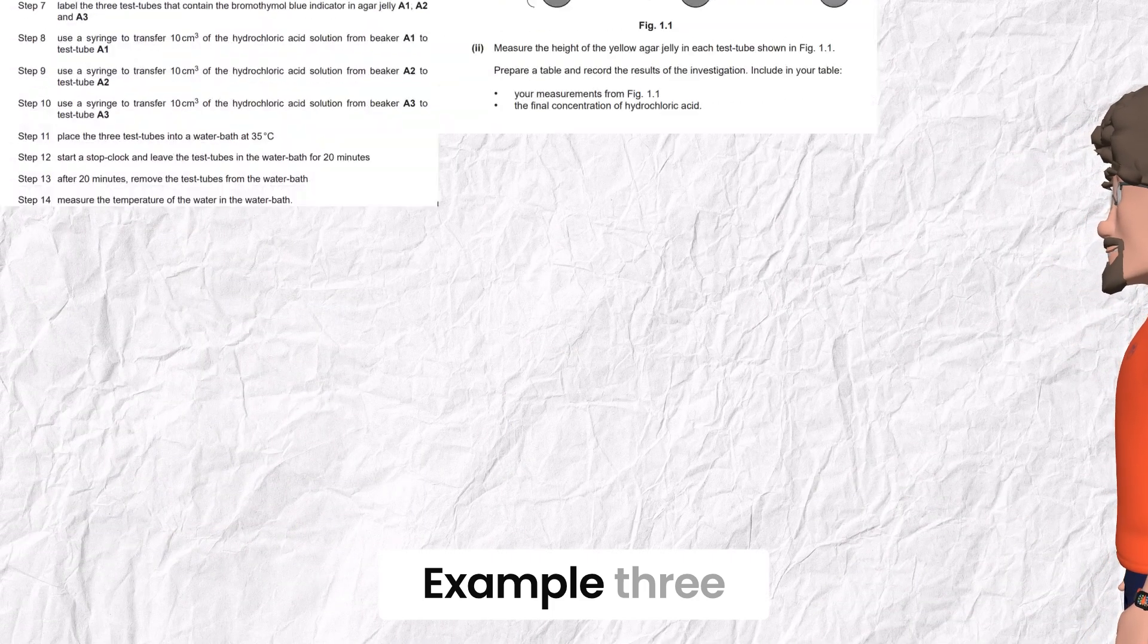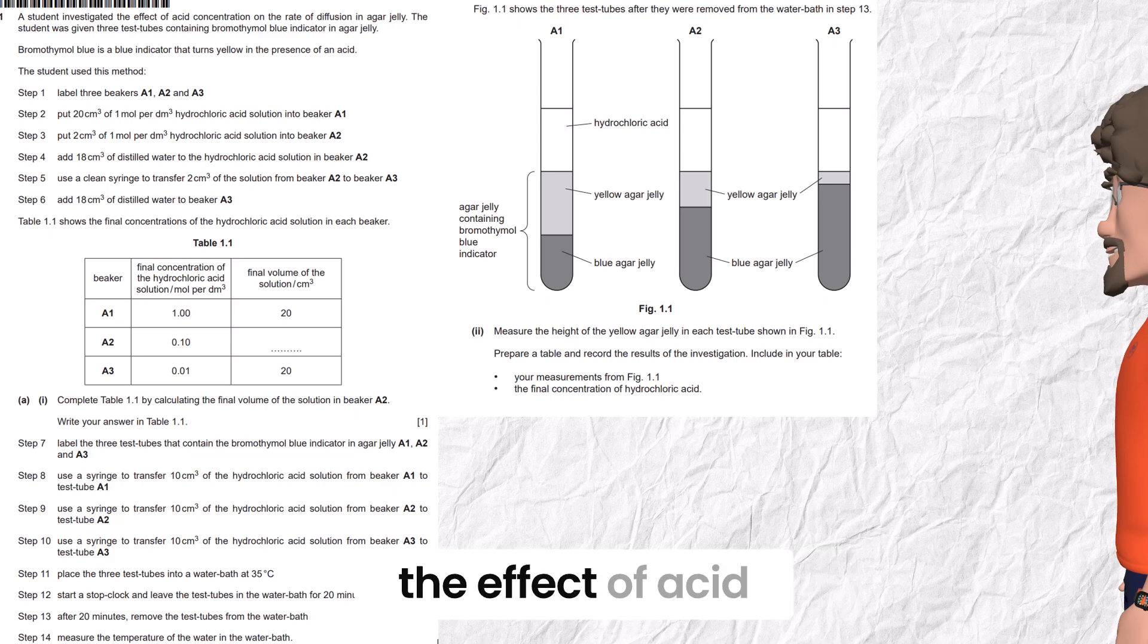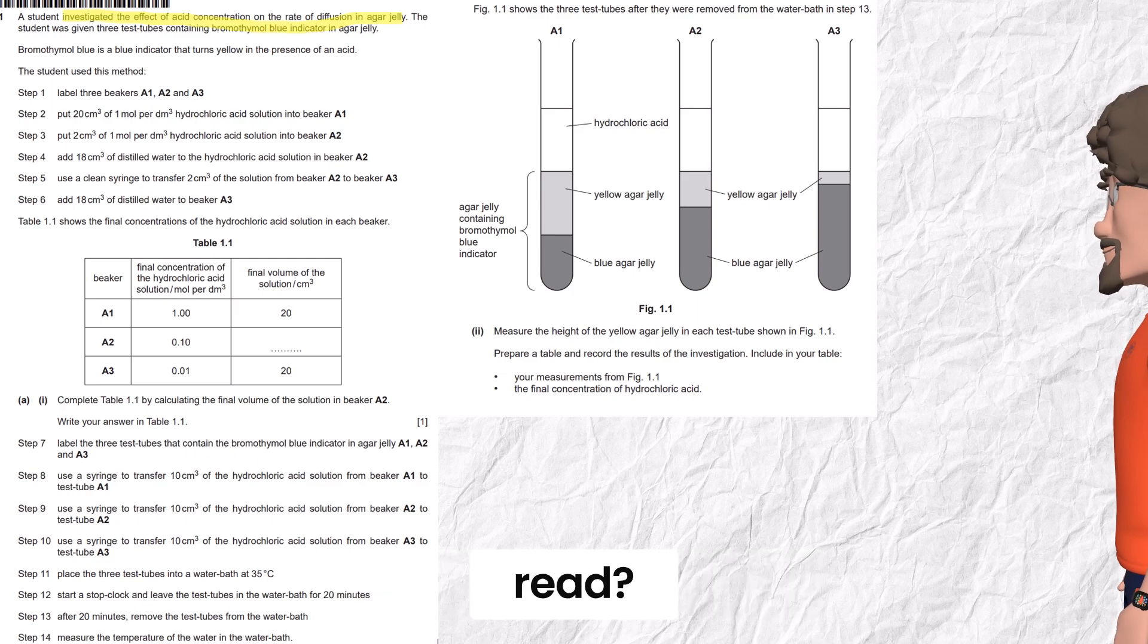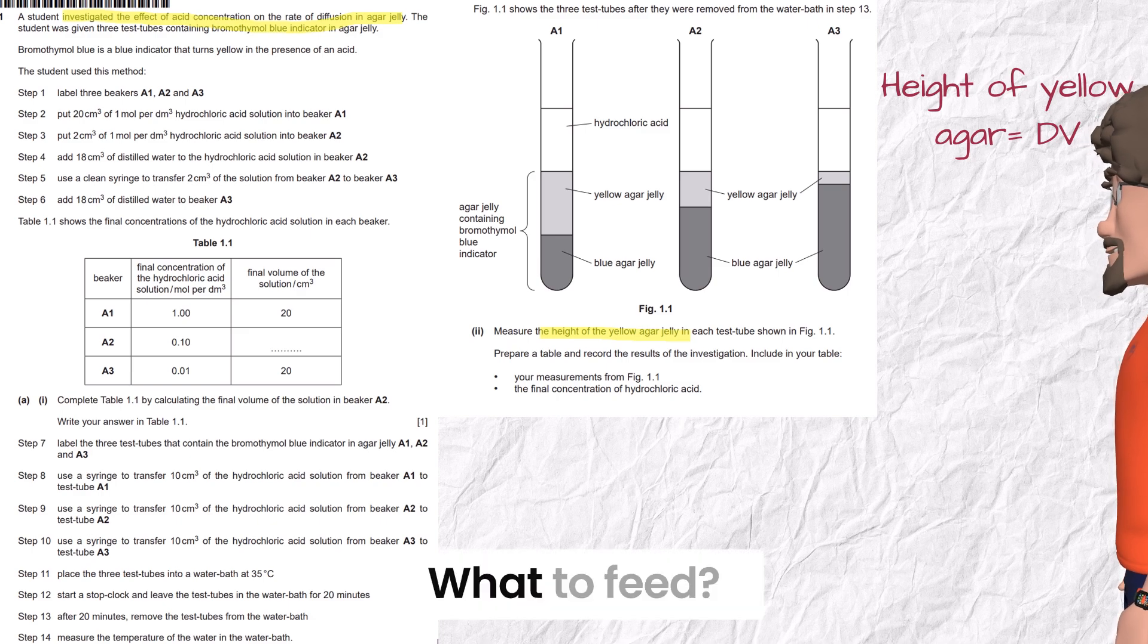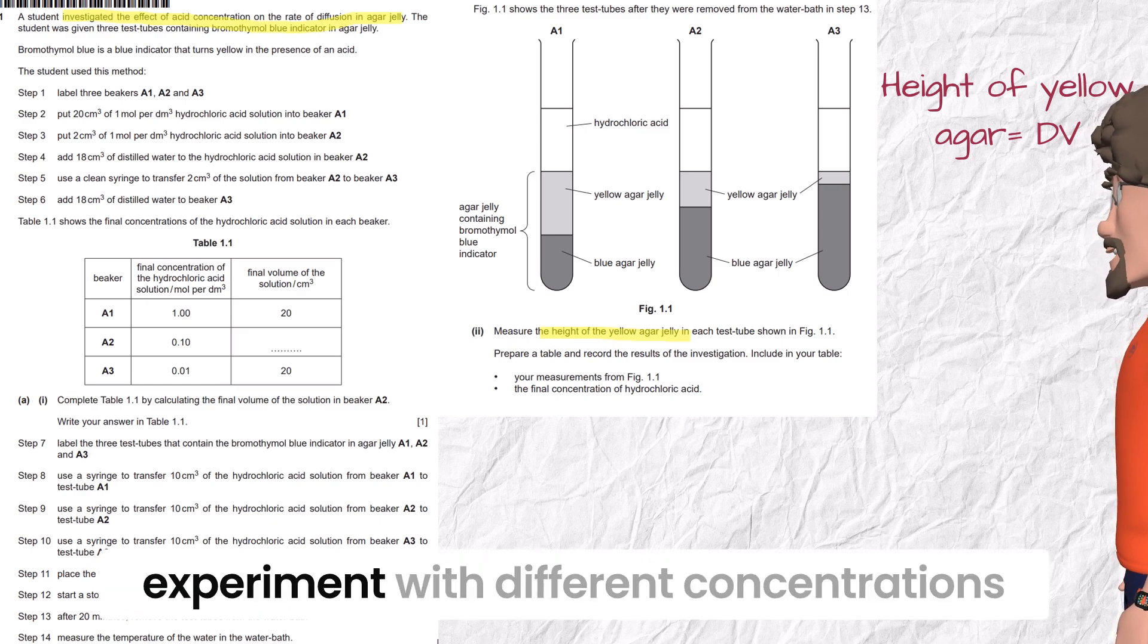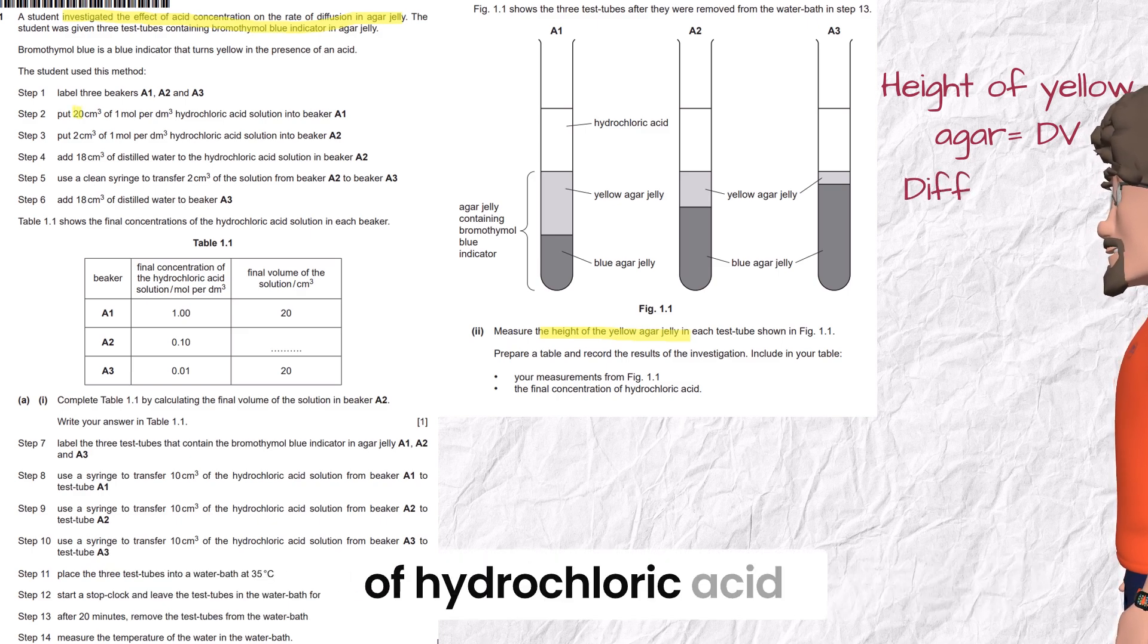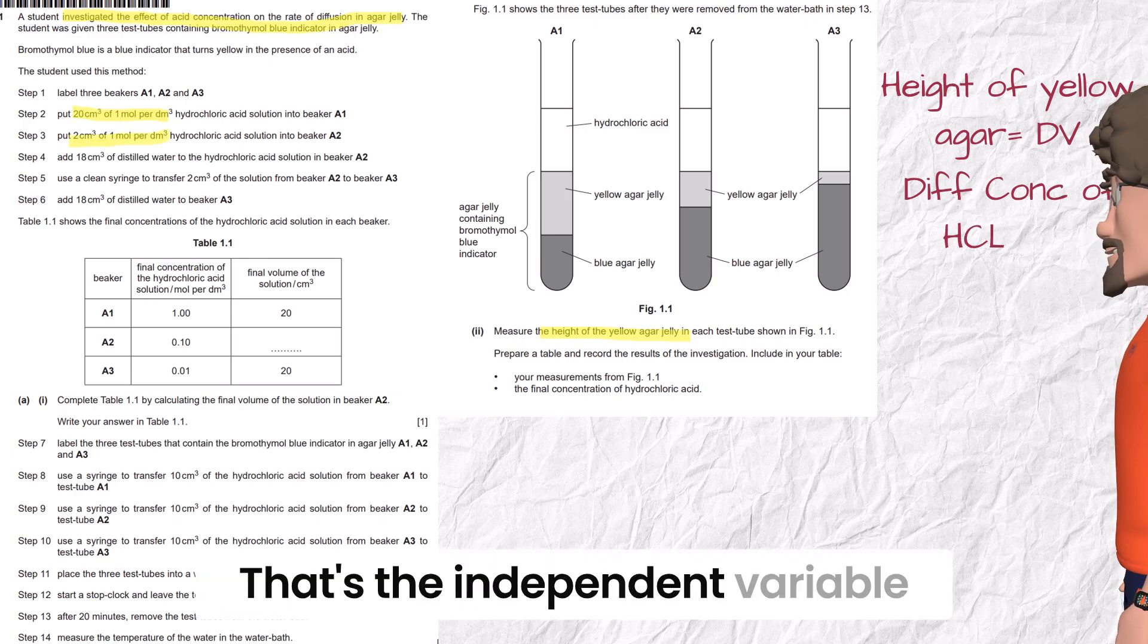Example three: investigate the effect of acid concentration on the rate of diffusion in agar jelly. To know the rate of diffusion, what to read? Yes, height of the yellow agar jelly. This is the dependent variable. What to feed? We must feed the experiment with different concentrations of hydrochloric acid. That's the independent variable.